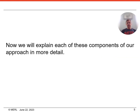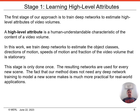Now we will explain each of these components of our approach in more detail. The first stage of our approach is to train deep networks to estimate high-level attributes of video volumes. A high-level attribute is a human understandable characteristic of the content of a video volume. In this work we train deep networks to estimate the object classes, directions of motion, speeds of motion, and fraction of the video volume that is stationary. This stage is only done once — the resulting networks are used for every new scene. The fact that our method does not need any deep network training to model a new scene makes it much more practical for real-world applications.